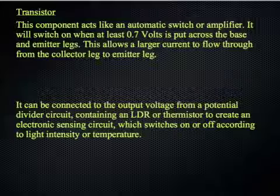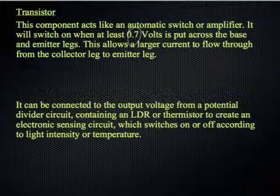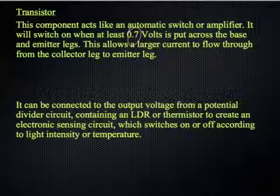So the transistor, this is a component that acts like an automatic switch and in some other applications like an amplifier. It will switch on when at least 0.7 volts is put across the base and emitter legs. This allows a larger current to flow through from a collector leg to the emitter leg.